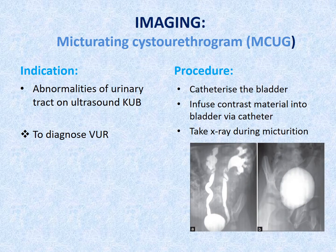Micturating cystourethrogram is indicated when abnormality of the urinary tract is detected on ultrasound. It is used primarily to diagnose vesicoureteric reflux. The procedure involves catheterization of the bladder, then contrast material is infused via the catheter, and an X-ray is taken when the child is micturating. The X-ray on the right is normal, whereas the one on the left shows evidence of severe bilateral vesicoureteric reflux with hydroureter and hydronephrosis.